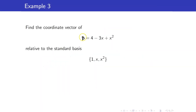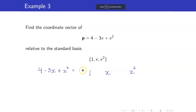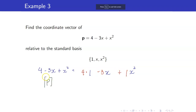Next, let us find the coordinate vector of the polynomial 4 minus 3X plus X squared in P2 relative to the standard basis. We write it as a linear combination of 1, X, and X squared. Obviously, the constants are going to be 4, -3, and 1. Therefore, the coordinate vector of P with respect to this basis B is equal to (4, -3, 1).